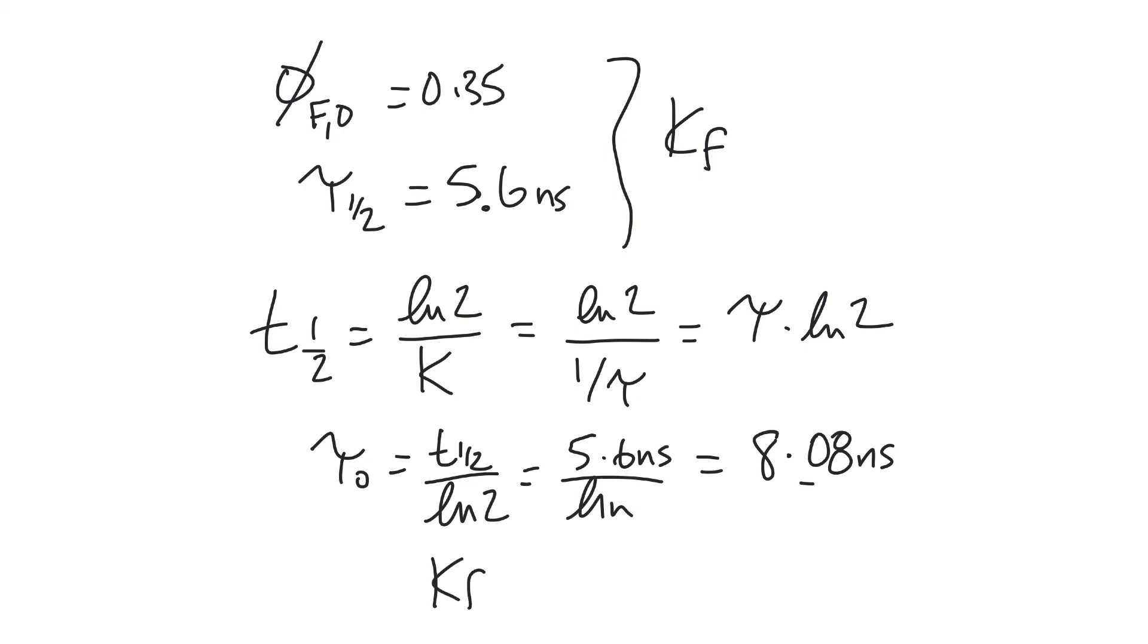And so just like before, we can calculate the fluorescence rate constant by just dividing our quantum yield by our lifetime. And again, nanoseconds, 10 to the minus 9 of a second. So this is going to be quite a large number here. And I get 4.3 times 10 to the 7 reciprocal seconds for our rate constant.